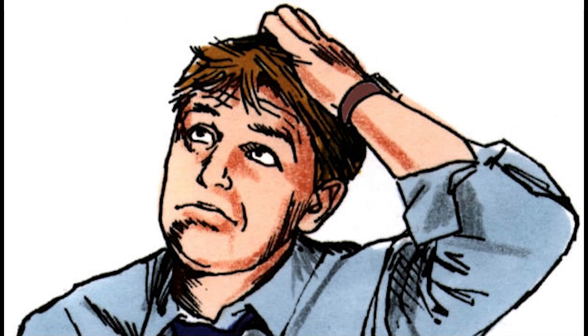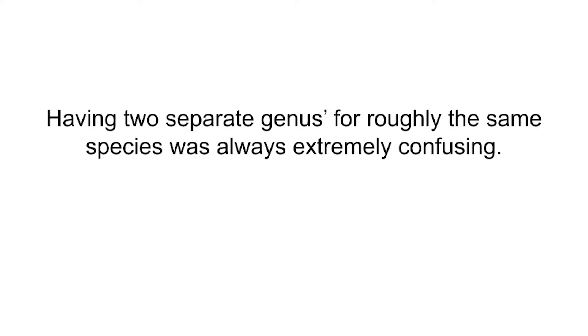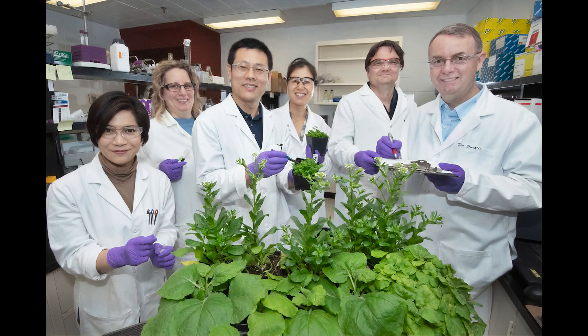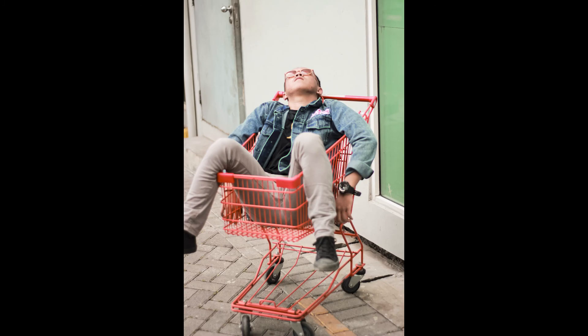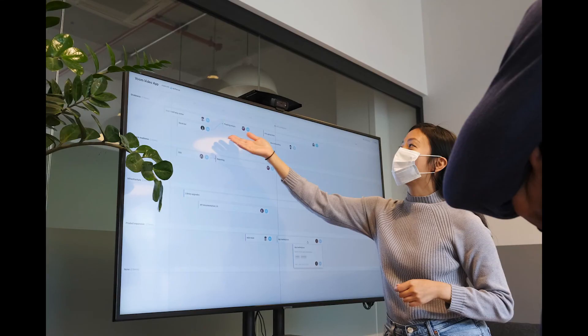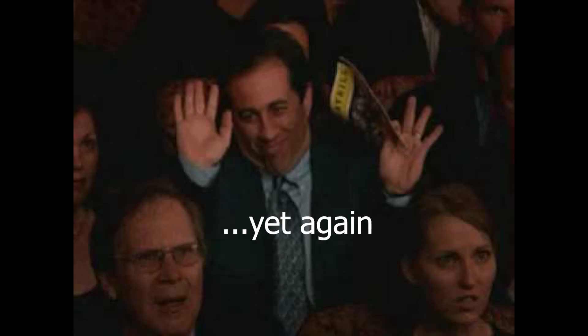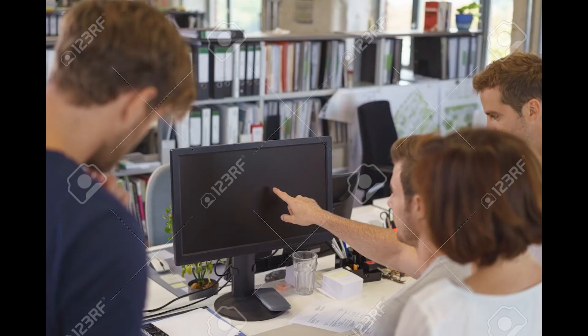Botryotinia is part of an officially outdated naming scheme. The fact that there were two names for effectively the same species — just with different reproductive stages — was confusing, and did not go overlooked by the mycological community. An effort launched in 2011 resulted in the concept of 'one fungus, one name.' For Botrytis cinerea, most would recommend Botrytis cinerea as the one name for every sexual stage, retiring Botryotinia.